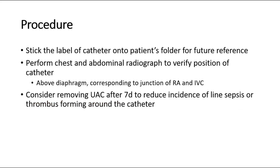We can also perform a chest and abdominal radiograph to verify the position of the catheter. The ideal position would be above the diaphragm, corresponding to the junction of the right atrium and inferior vena cava. Consider removing the catheter after 7 days to reduce the incidence of line sepsis or thrombus forming around the catheter.